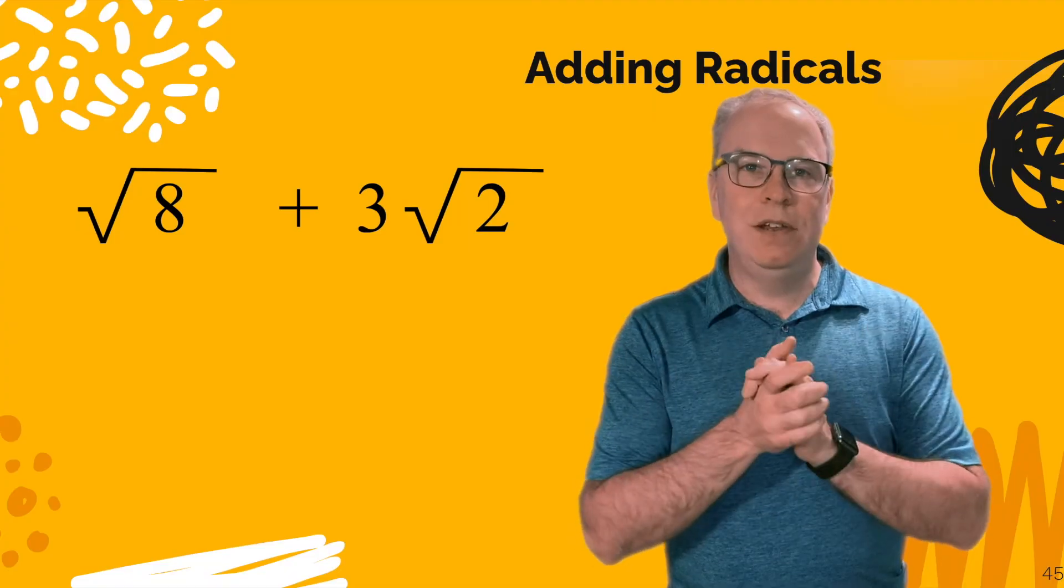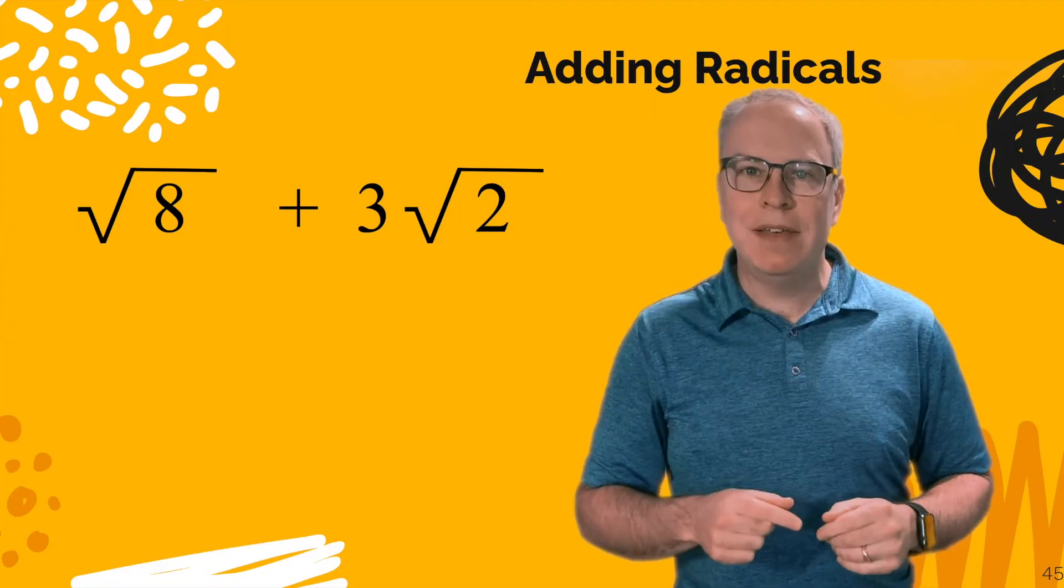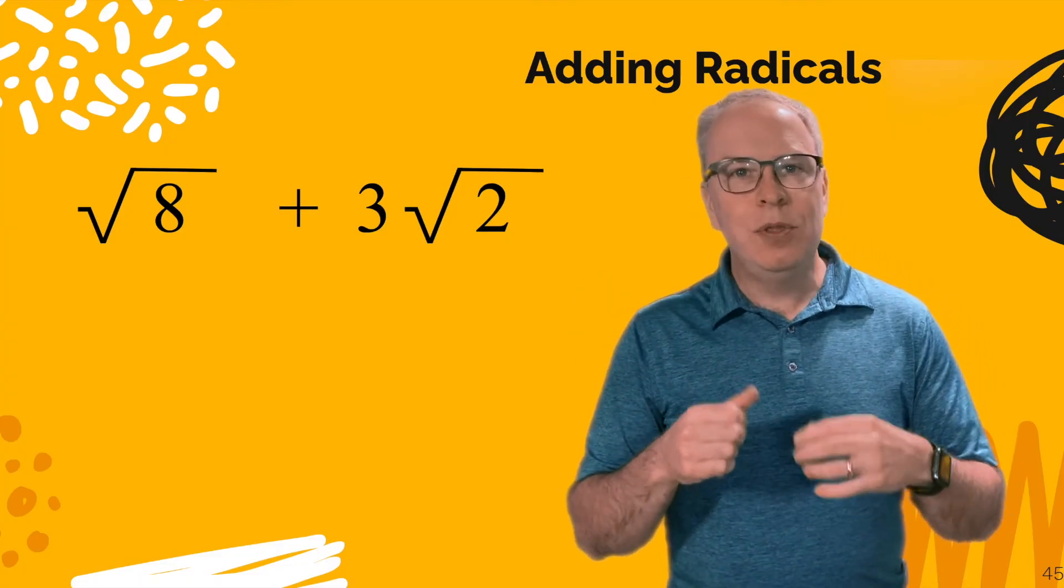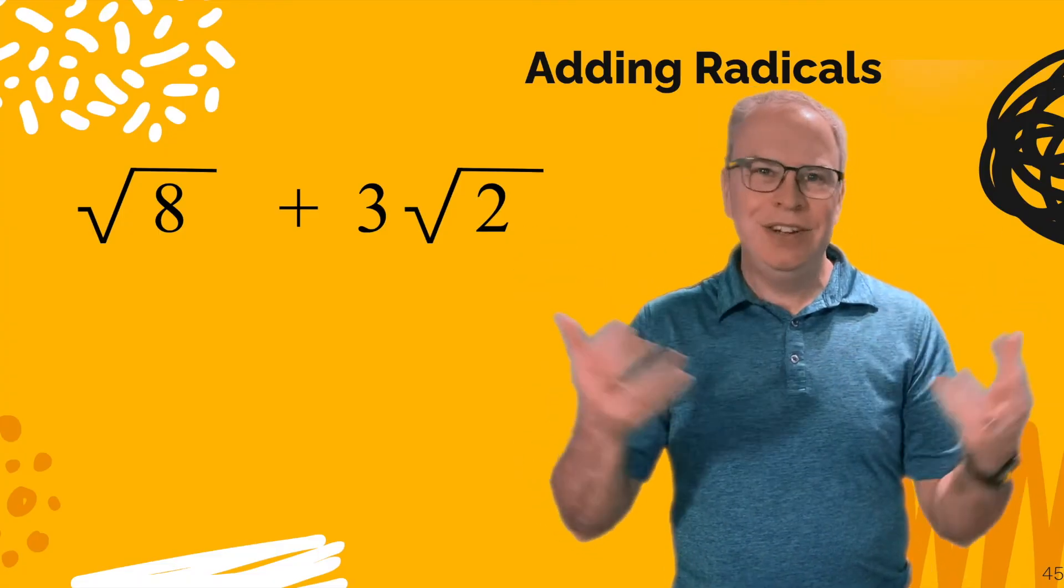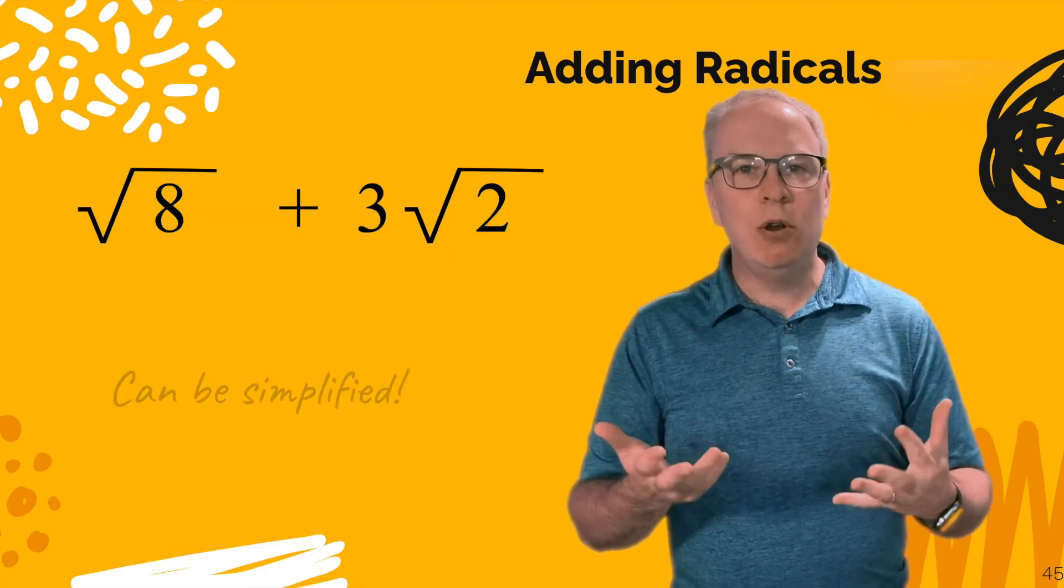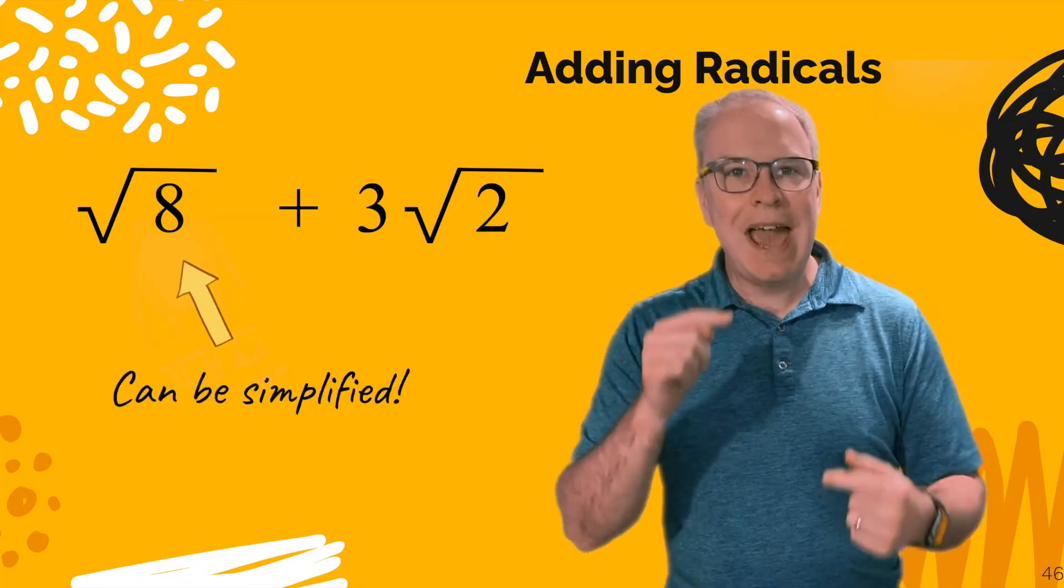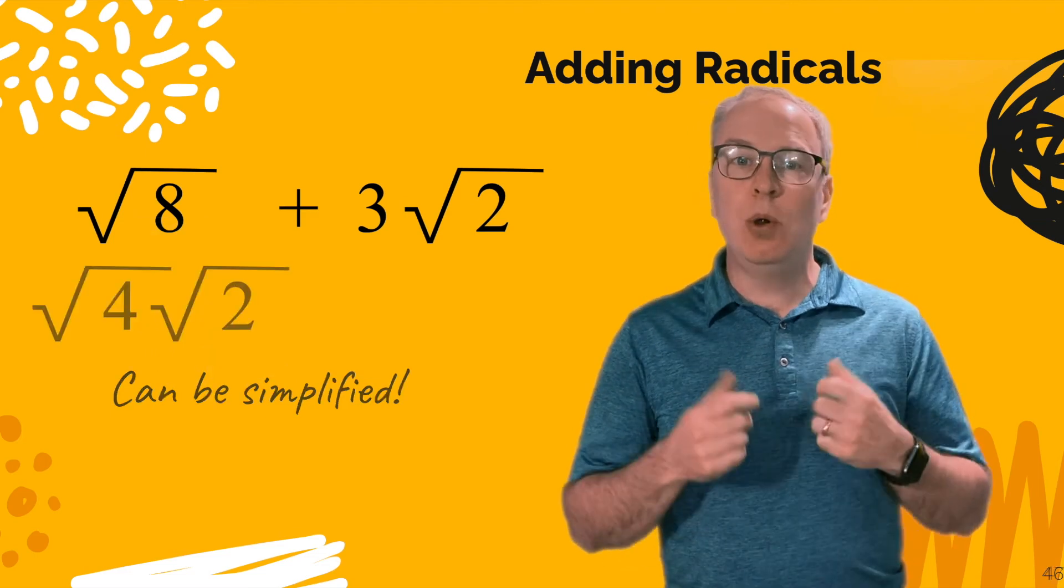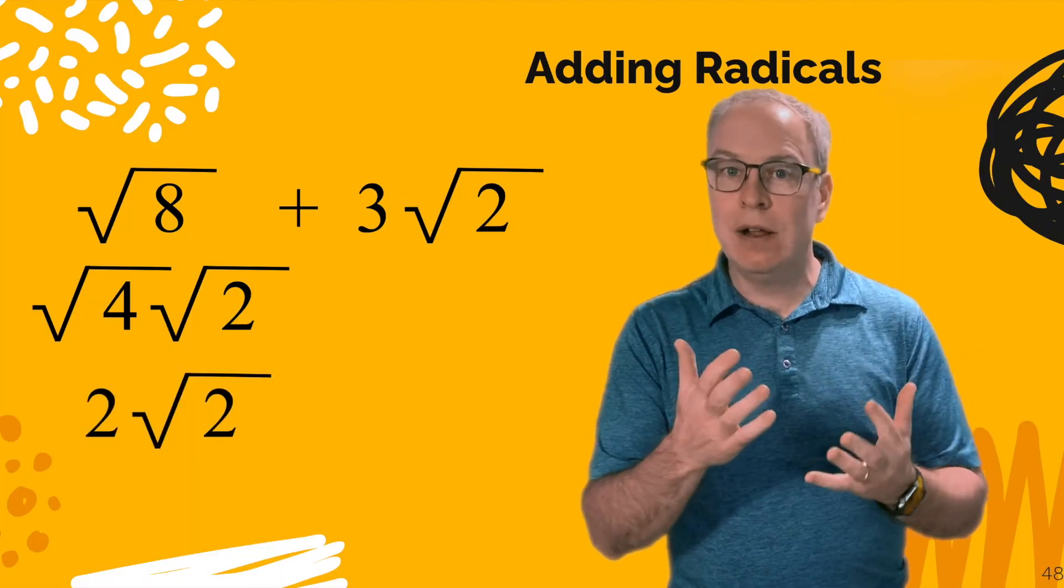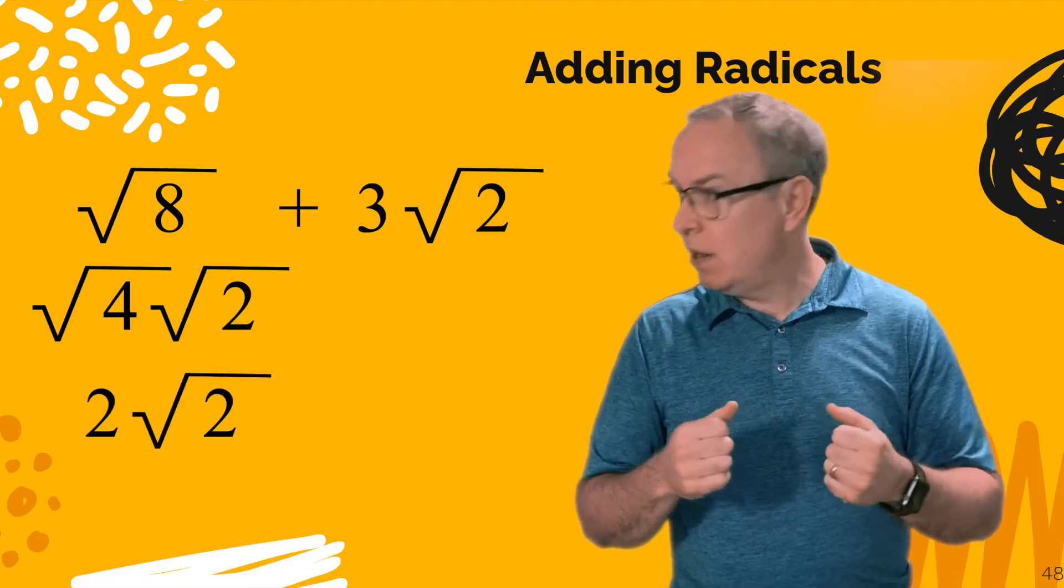Now you might be thinking to yourself, I remember my math teacher doing some crazy math voodoo and being able to do something like over here where the radicals don't match, but yet your teacher was able to combine it somehow. Well, let me go through this. The square root of 8, that's a radical that can be simplified. It is the square root of 4 times the square root of 2. And the square root of 4 is 2, so 2 radical 2 plus 3 radical 2.